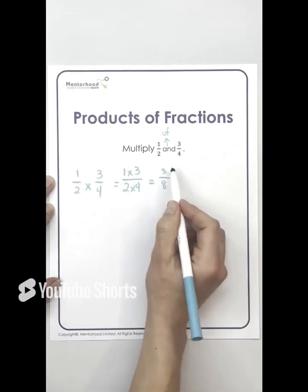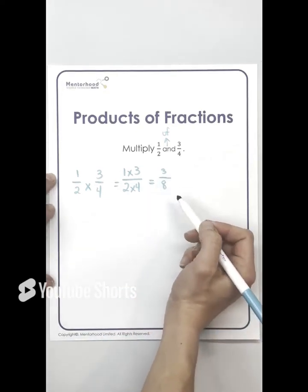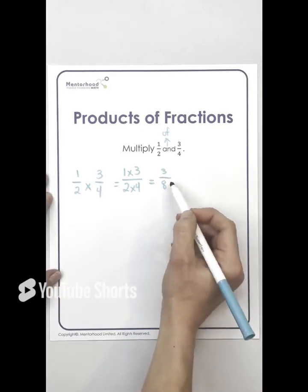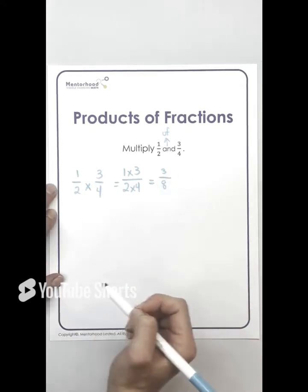Now is this in simplest form? Yes, it is because three and eight don't divide. They don't both divide by two or three. They only divide by one, which would leave us with the same answer. So that is in simplest form.